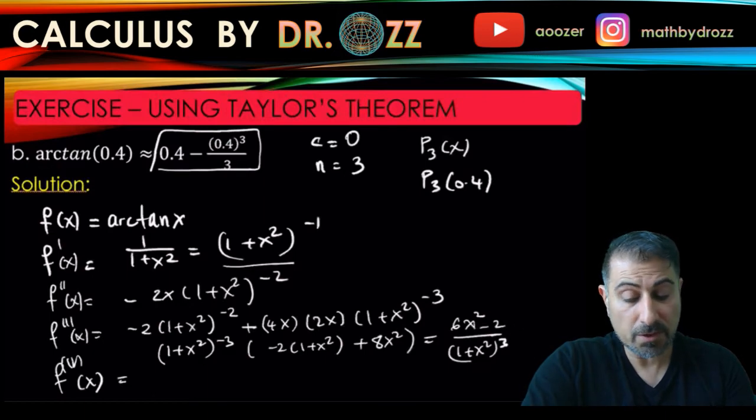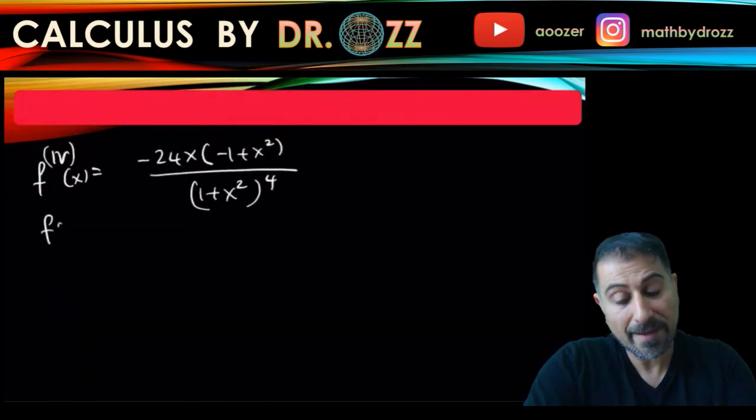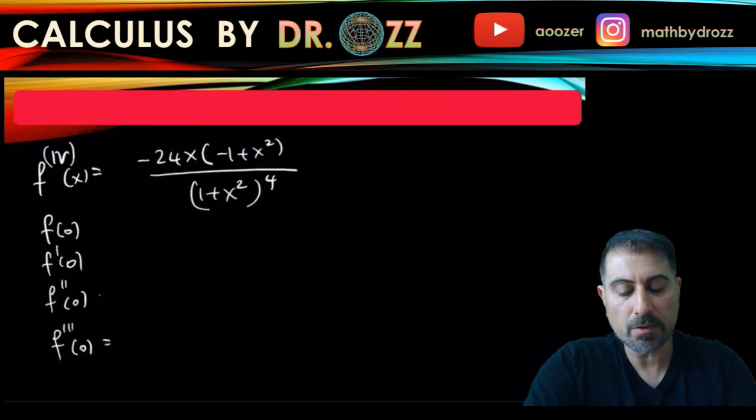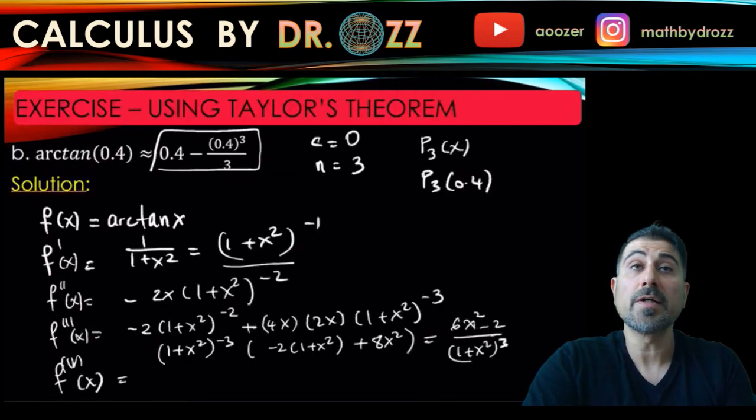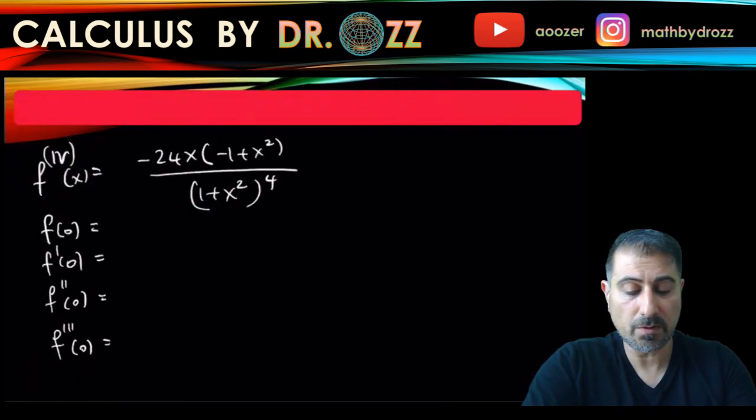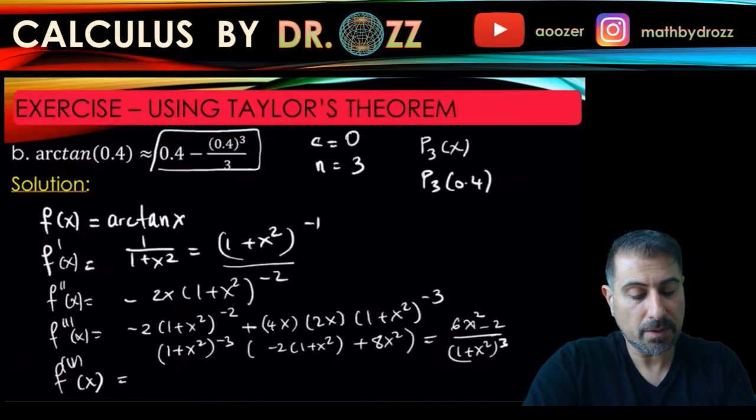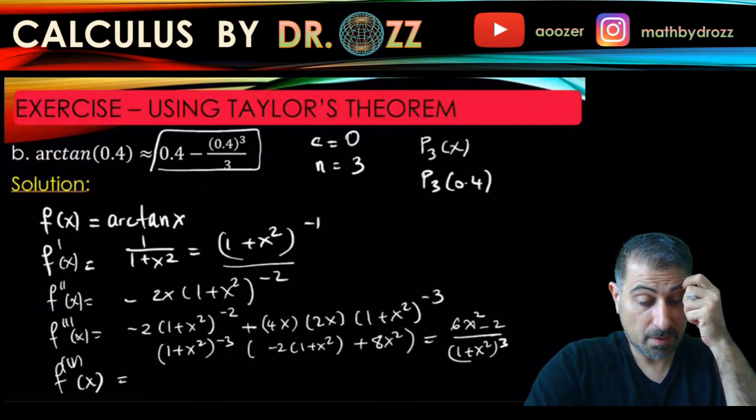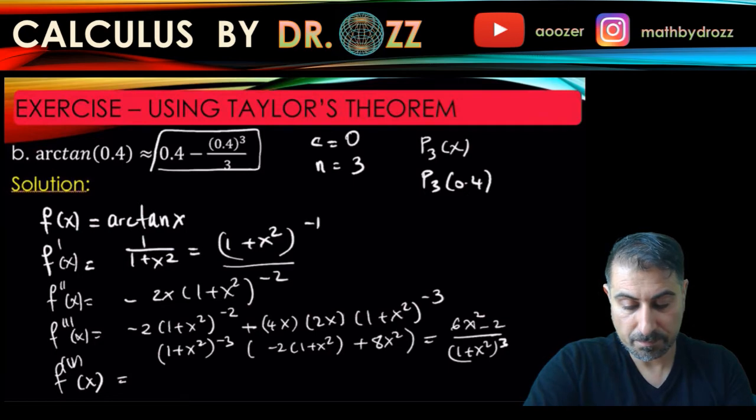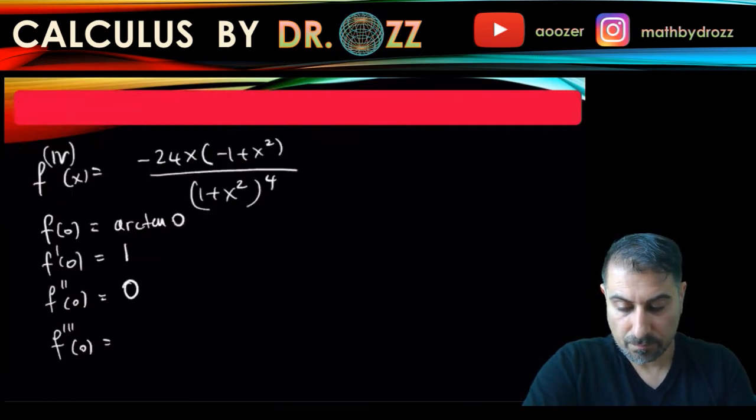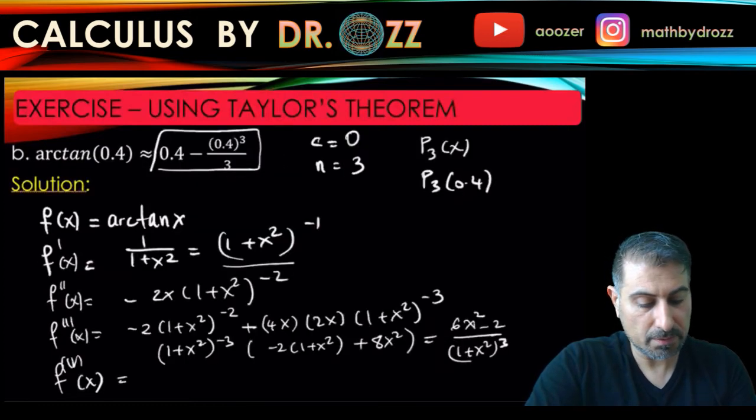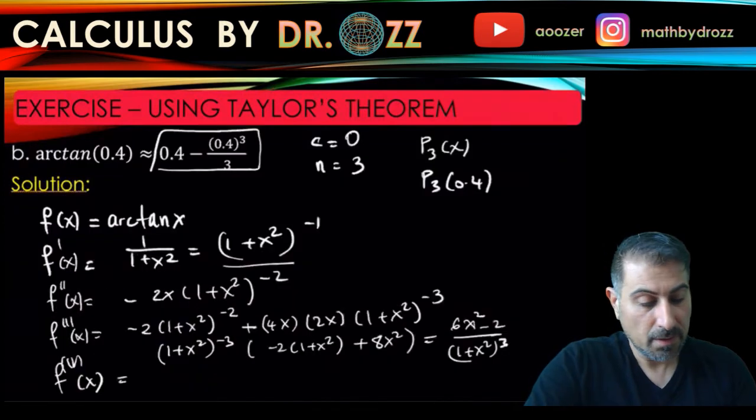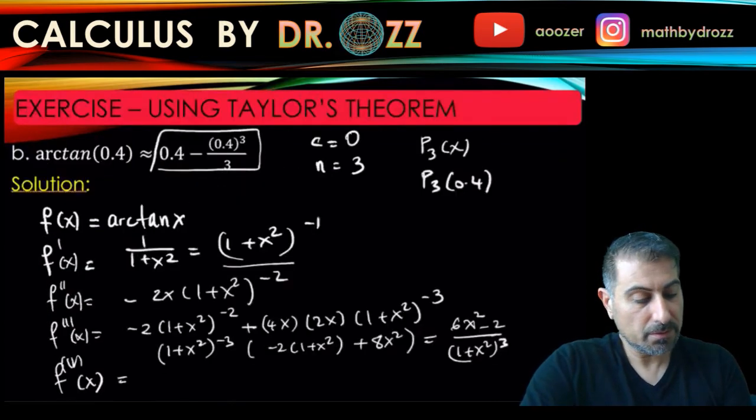I'm going to look at f(0), f'(0), f''(0), and f'''(0). If you have your calculator ready, you can check those values. This is arctan of 0, which is 0. f'(0) is just 1. f''(0) looks to be 0. And f'''(0) is just negative 2.